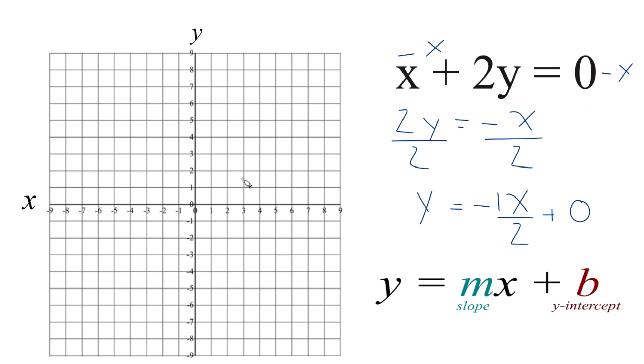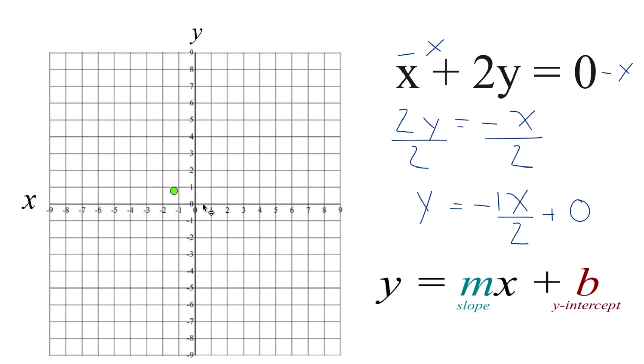So we could put our first point right here, and this is where the line is going to cross the y-axis, the y-intercept. For the slope we have negative 1 over 2, and we could think of that as rise over run.